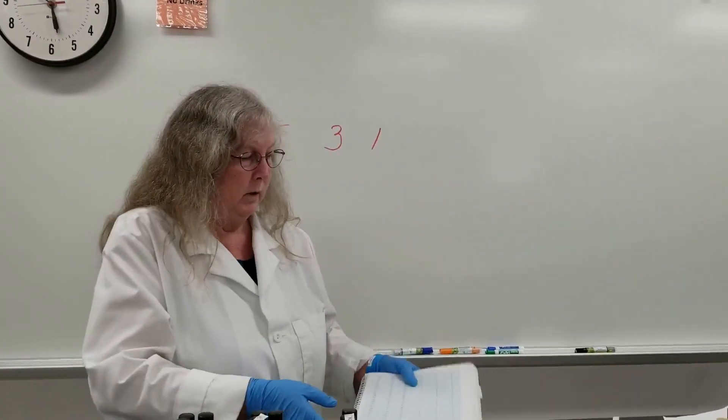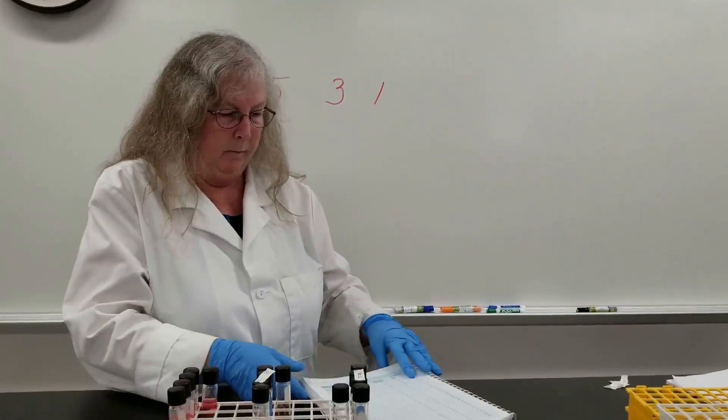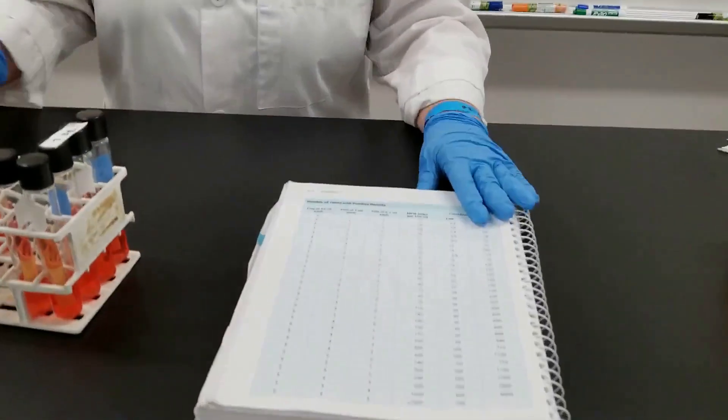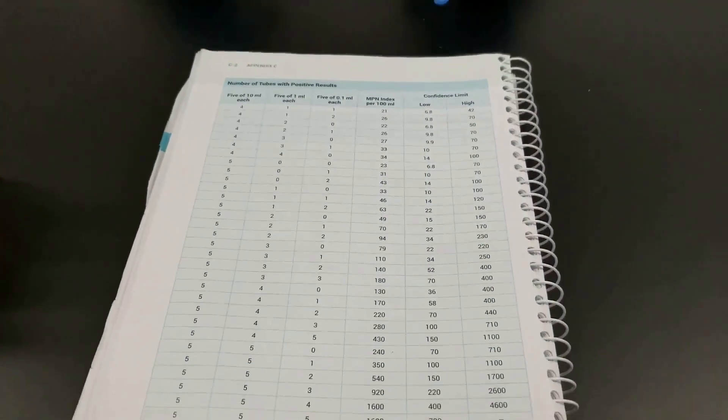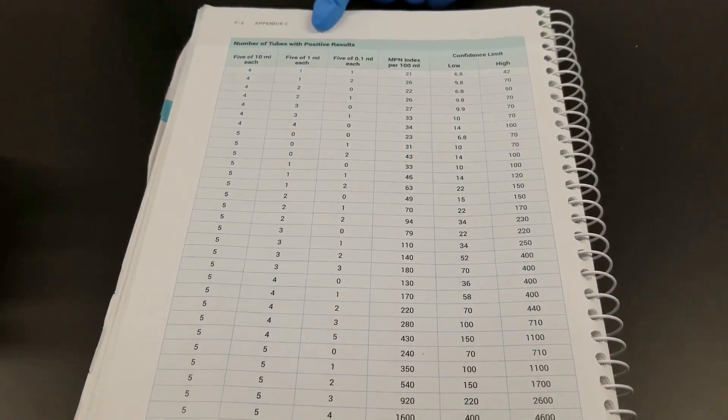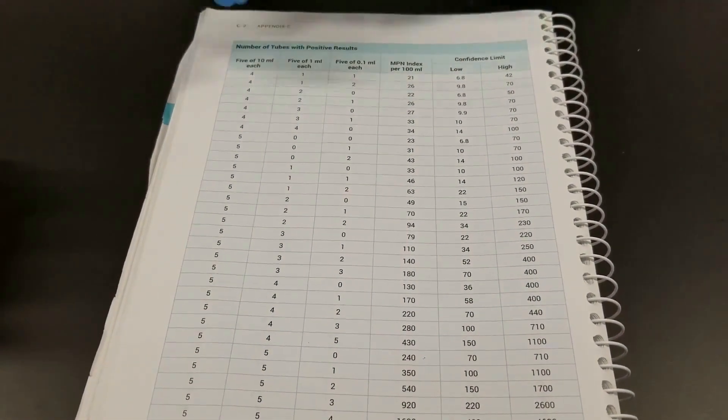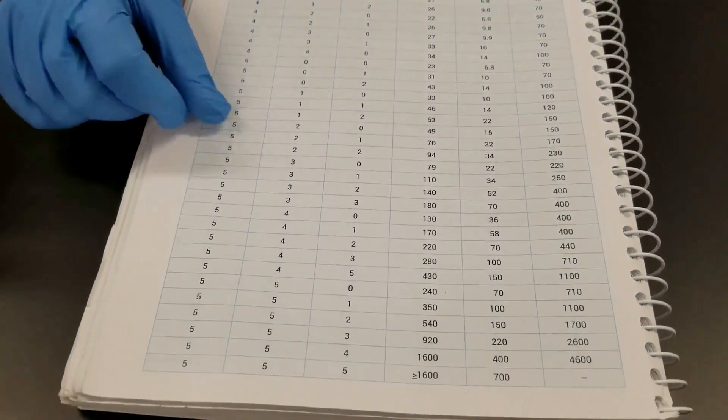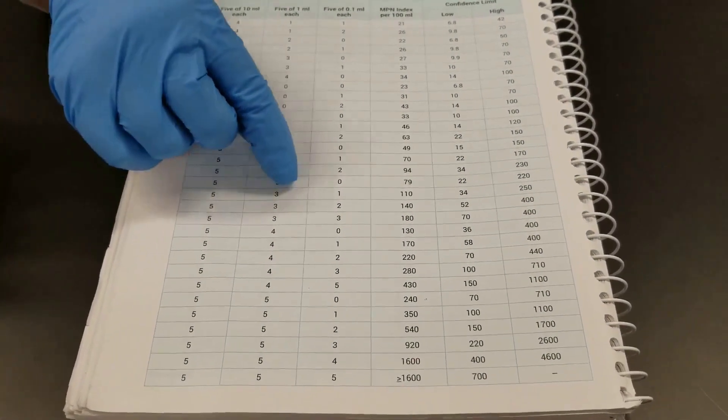Then you would go to, there's a standard book or chart, where you would go to look up that number that you recorded. So, in our case, we look at, find five, three, one.